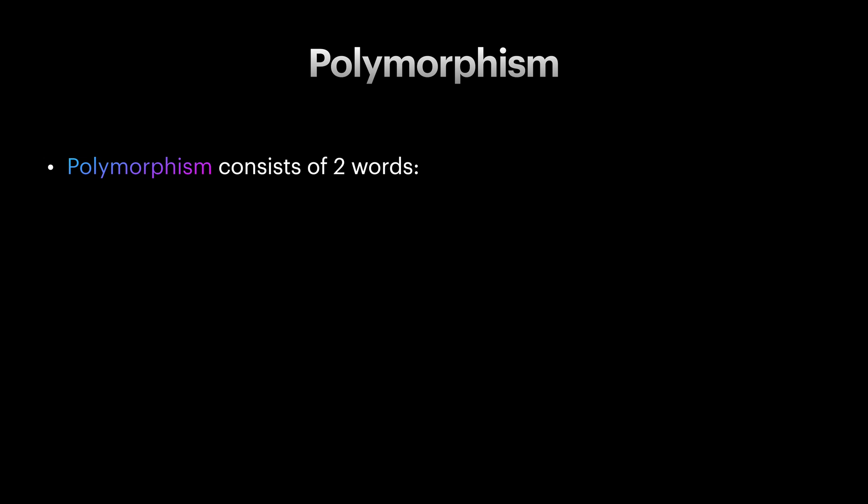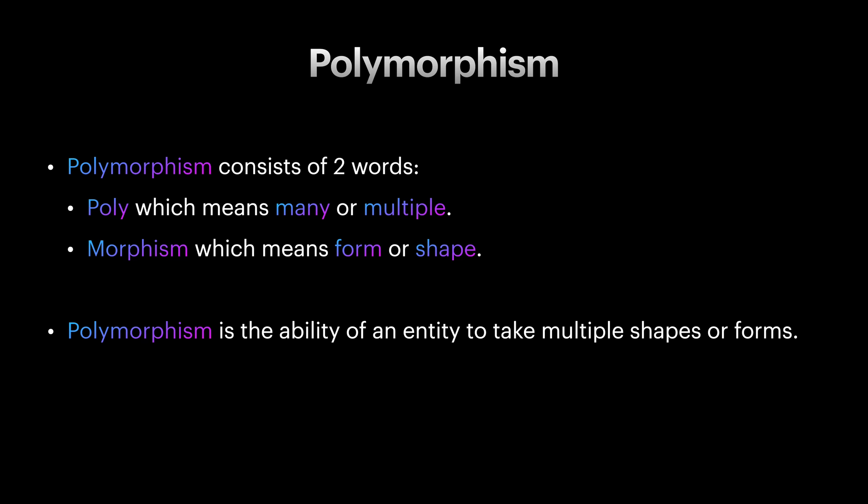But first let's see what polymorphism means. Polymorphism is composed of two words, poly meaning many or multiple and morphism derived from morph meaning form or shape. Polymorphism is the ability of an entity such as a function or a data type to take on multiple forms or representations.